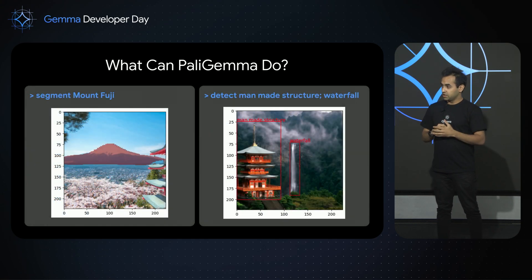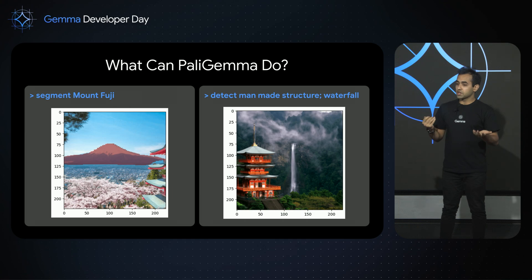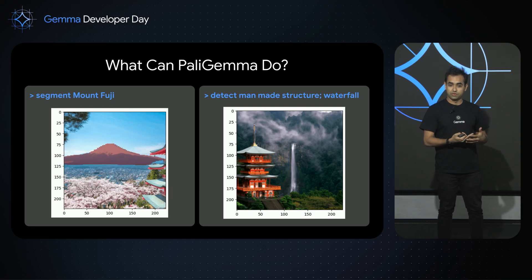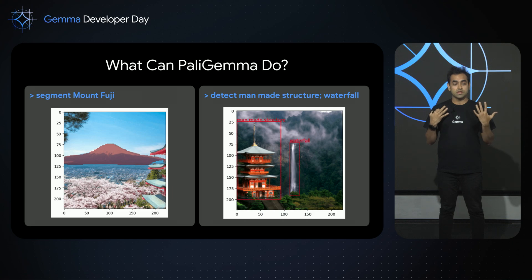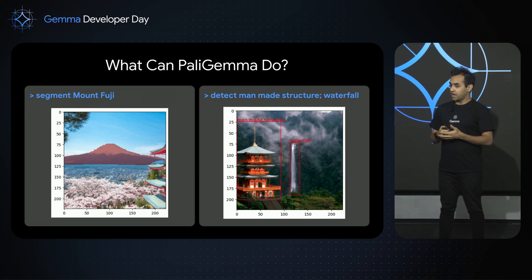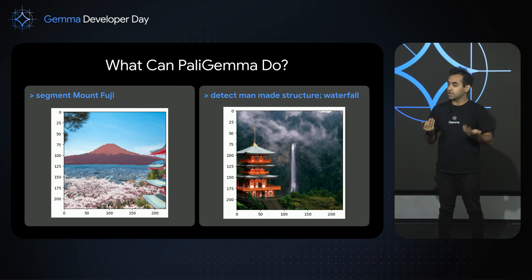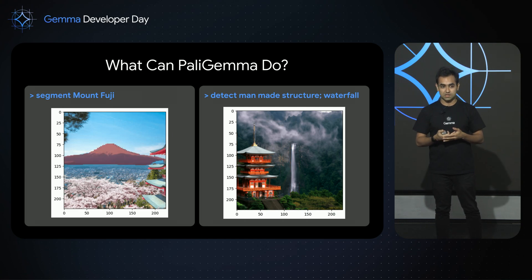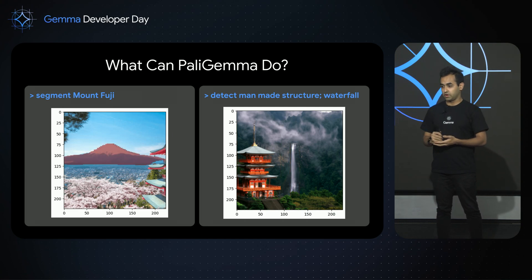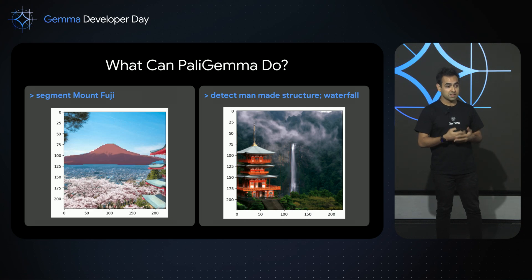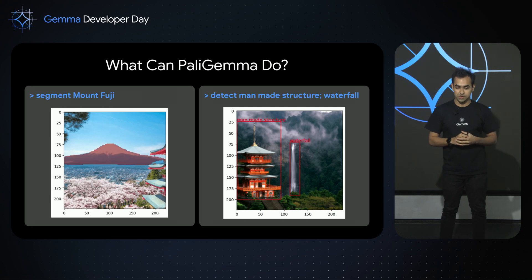But more interestingly, you can even apply it to computer vision tasks. You can ask a large language model through PaliGemma to answer questions about what are the segmentations of an image and where you can find the boundaries between objects. You can also ask it to detect a variety of things all at once, such as a man-made structure and a waterfall, and it will give you bounding boxes just like you would expect of a standard computer vision model.